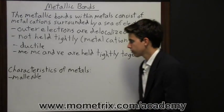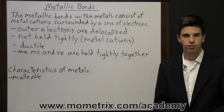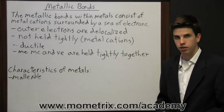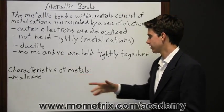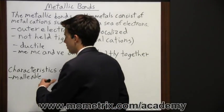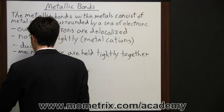And because metal cations and valence electrons are held tightly together, metals can have high melting points over a wide range.